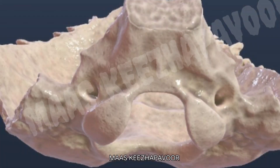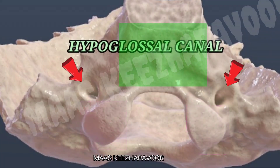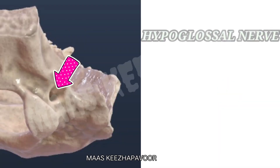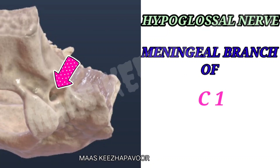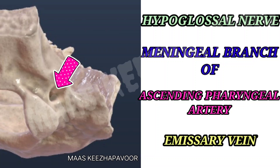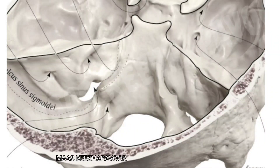Above and medial to the occipital condyle, at the junction of fusion between the basilar part and occipital condyle, the hypoglossal canal is present. The structures passing through the hypoglossal canal are: the hypoglossal nerve, meningeal branch of the first cervical segment and its ventral ramus, meningeal branch of the ascending pharyngeal artery, and an emissary vein connecting the basilar venous plexus with the pharyngeal plexus of veins.